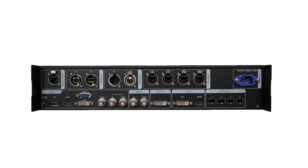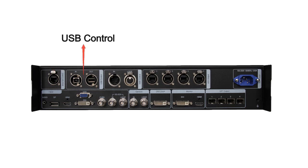In the back view, it has four parts. The first part is the control interface. We have two ways of controlling. One way is by connecting the network control port to a computer or Wi-Fi router, so that we can use iPad, smartphone, or computer to control the Nova Pro HD. The other way is by connecting the USB control port. And this is the DMX control port — we can connect it to a DMX controller.